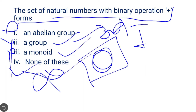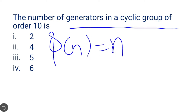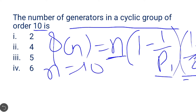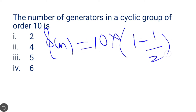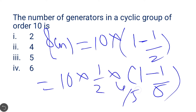Next question: the number of generators in the cyclic group of order 10. The formula for calculating generators of a cyclic group is Euler's totient φ(n) = n × (1 − 1/p1) × (1 − 1/p2) × …, where p1 and p2 are the prime factors of n. For n = 10, the prime factors are 2 and 5, so φ(10) = 10 × (1 − 1/2) × (1 − 1/5) = 4. The correct answer is option 2.